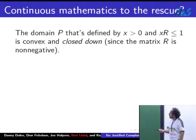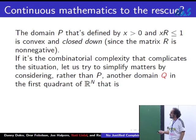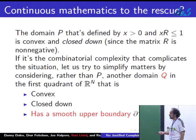What about this domain? It's a closed down domain in N space. The matrix R is a non-negative matrix. We're trying to replace this domain P by another domain Q that sits in the first quadrant of R^N that in many respects is very similar to P. It's closed down, it's convex, except I want to smooth out this upper envelope with the hope that that will simplify things for me.